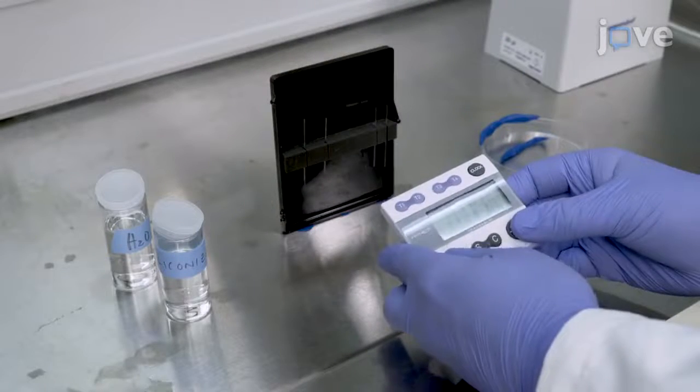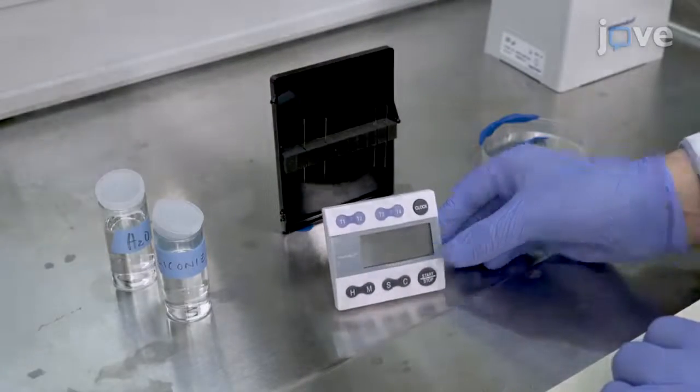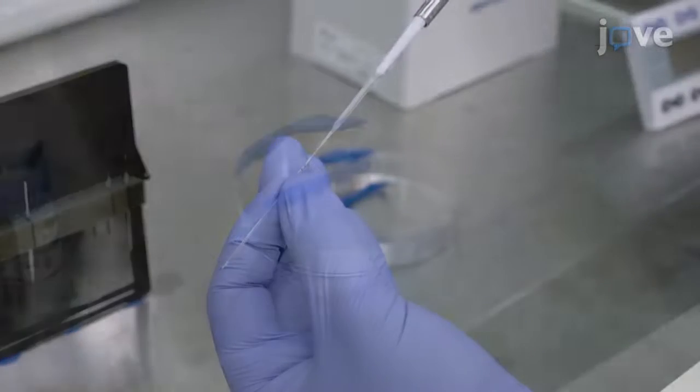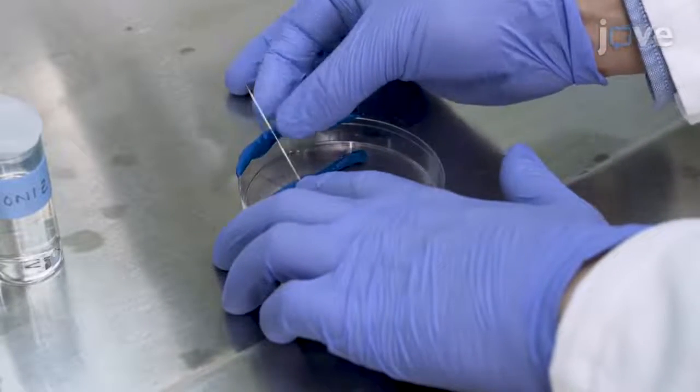Leave the siliconizing agent in the glass needle for 10 minutes before using a new loading pipette to aspirate the solution. Then dry the needles in a fume hood overnight.